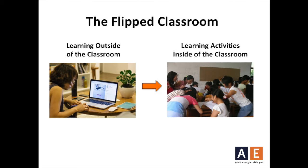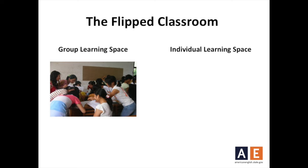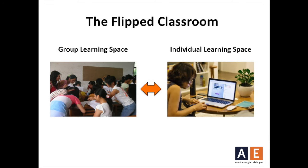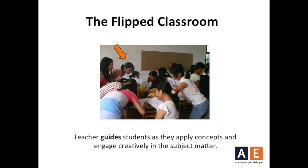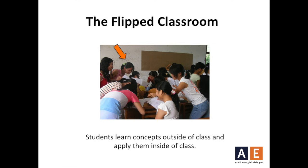One way of looking at flipped learning is moving what traditionally happens in the group learning space to the individual learning space, and then taking what traditionally happens in the individual learning space and moving it into the group learning space, or classroom. The teacher's role is more of a guide as students practice — not the almighty giver of information. Students can learn the concepts outside of class and use class time to apply the concepts.